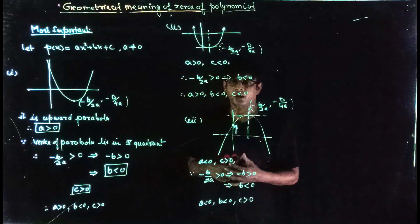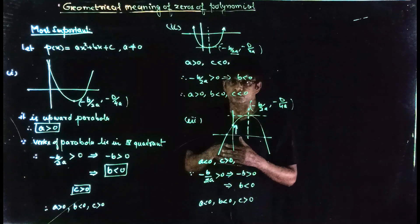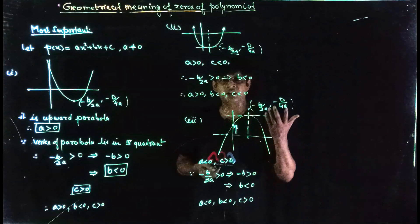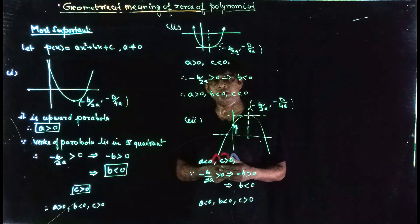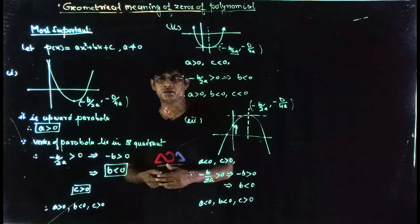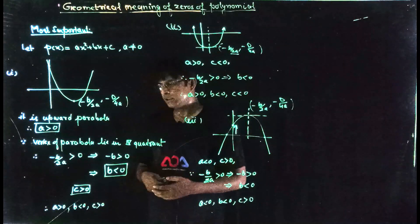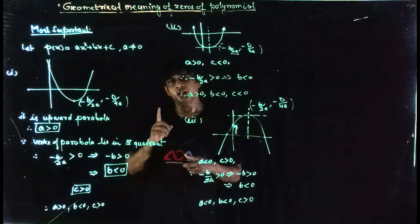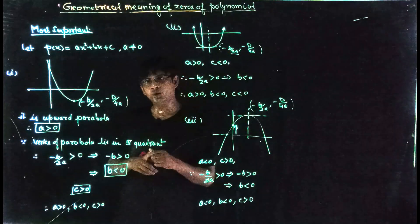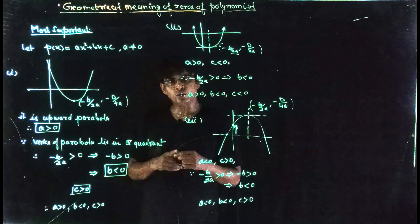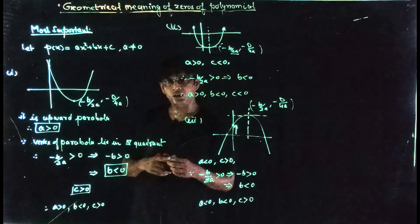Practice this concept with different shapes of parabolas. If you have any doubts, you can discuss them with me. In the next lecture, we will discuss the relation between zeros of a polynomial and the coefficients of the polynomial.